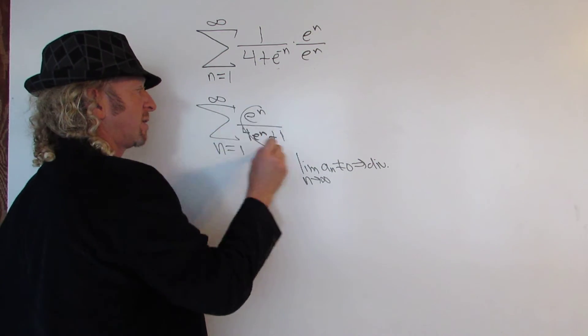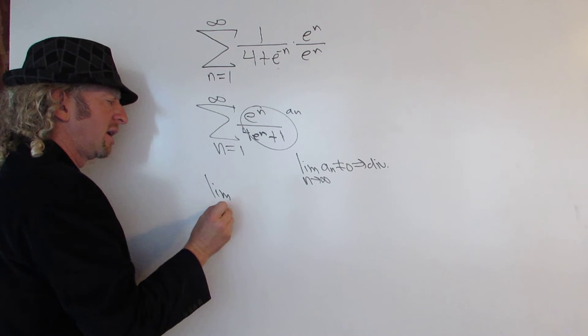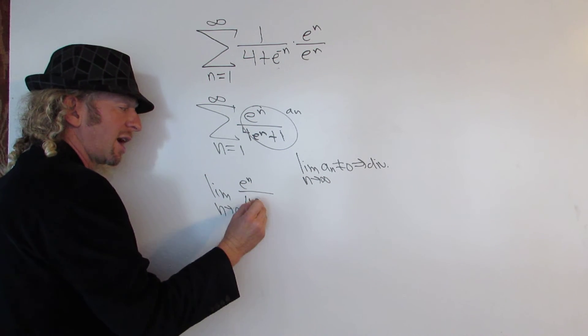So in this case, this is our a sub n. So all we have to do is take this limit. So we have the limit as n approaches infinity of e to the n over 4 e to the n plus 1.